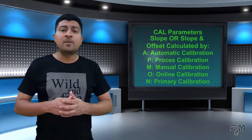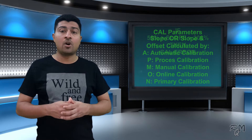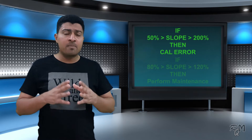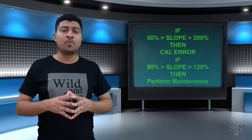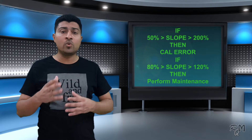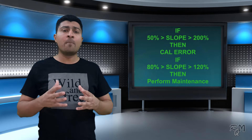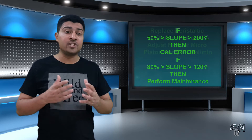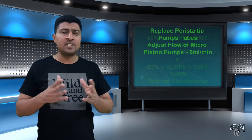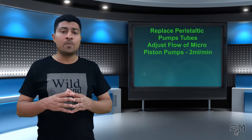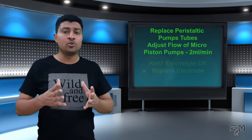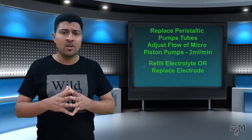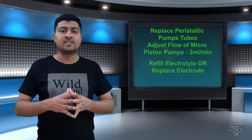If system calibration slope results are less than 50% or more than 200%, the analyzer will display a calibration error. However, I recommend that if system calibration slope results are near to 80% or near to 120%, it is better to perform maintenance of the analyzer. Most probably it is due to aging of the reagent pump tubes — better to replace the tubes. Sometimes if the millivolt slope is not normal, you may need to refill the electrolyte of the ion-selective electrode or replace the electrode.